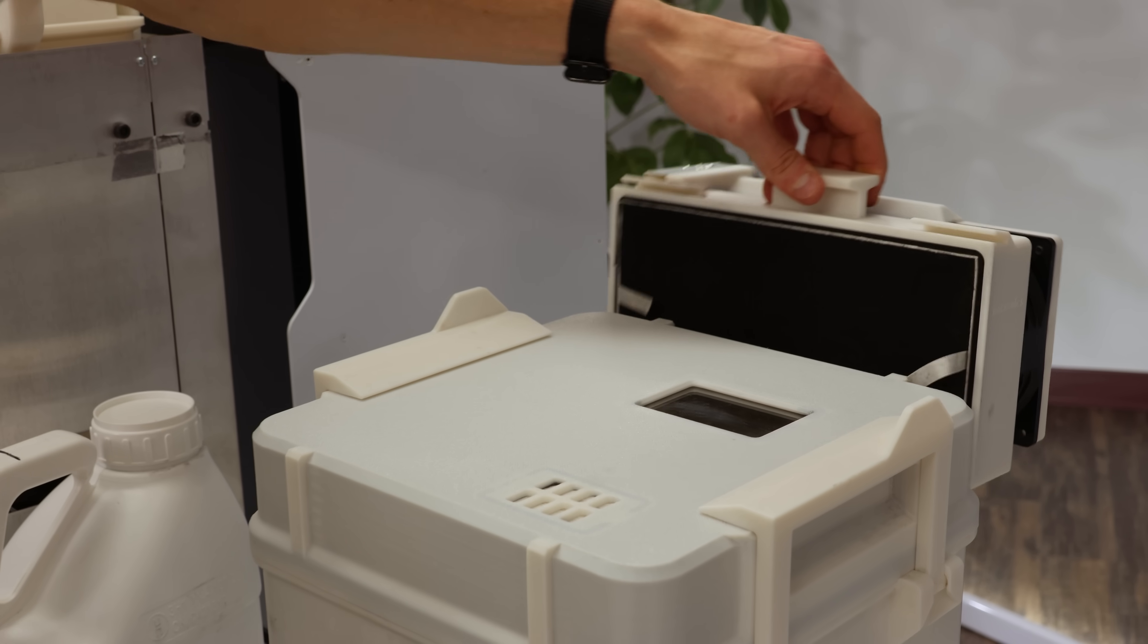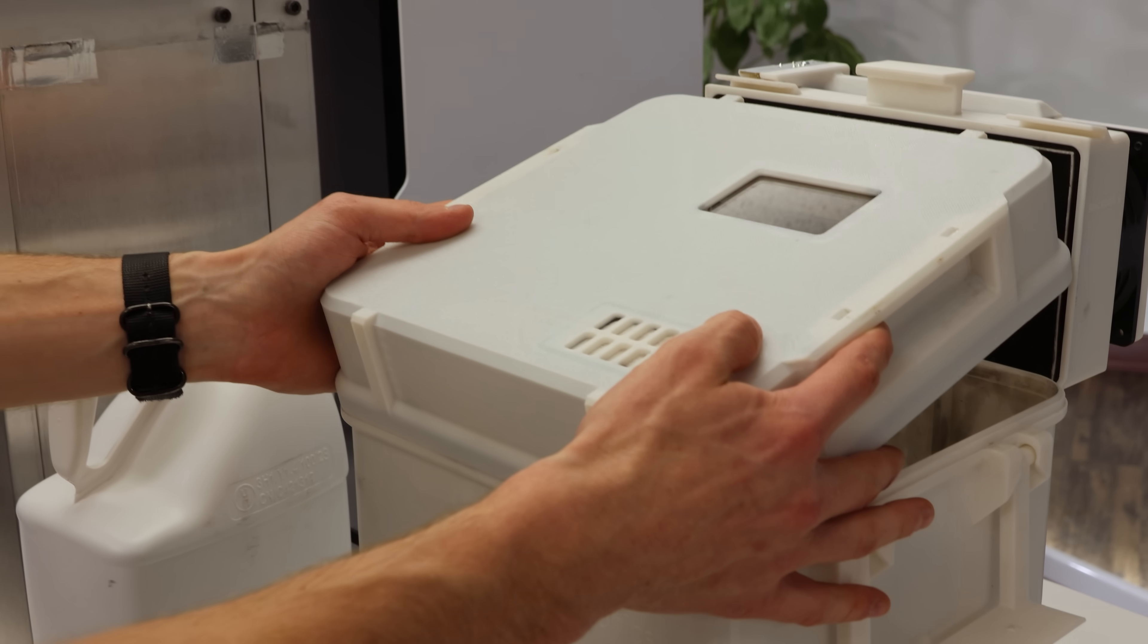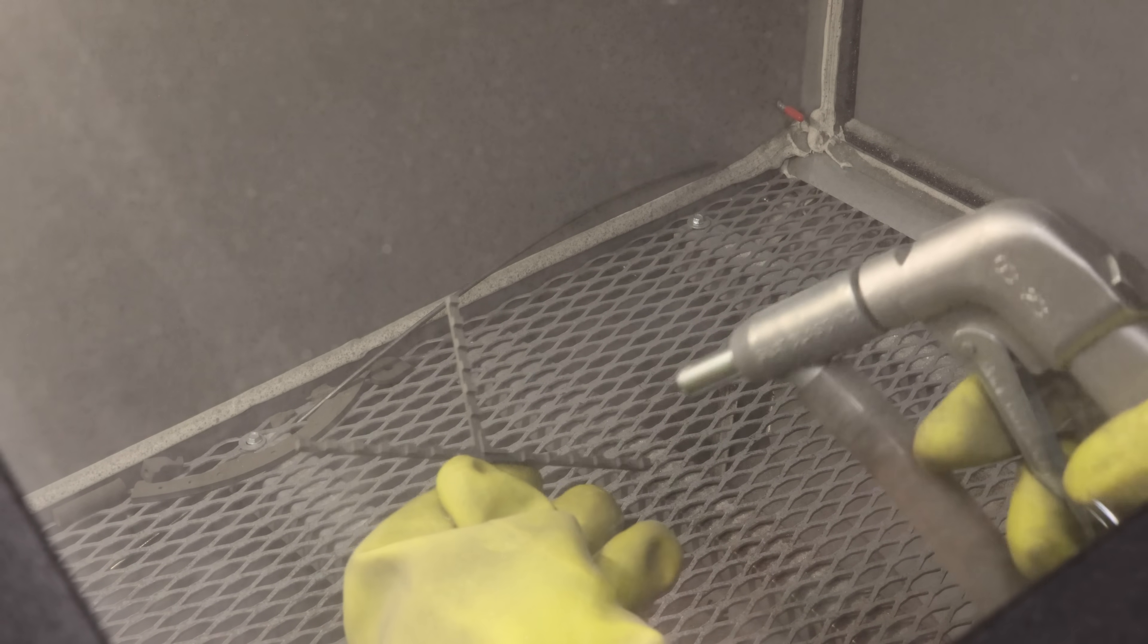Let's reattach the dust extractor and take a look at our print. Open the lid slowly to allow the extractor to clear any dust. Shaking the bin gets rid of most of the powder, but for best results, clean the part in a sandblaster with glass beads.